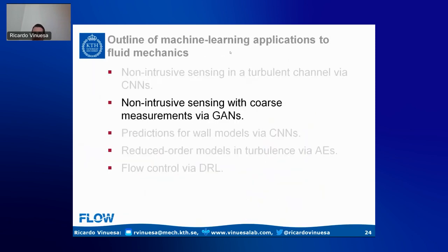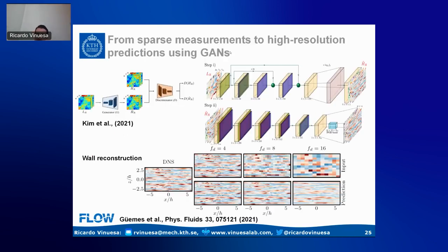The second application is also non-intrusive sensing, but we consider much coarser sensors at the wall — mimicking experimental resolution rather than DNS resolution. To do this type of prediction, we down-sample the wall information to mimic experimental resolution and use GANs — generative adversarial networks.